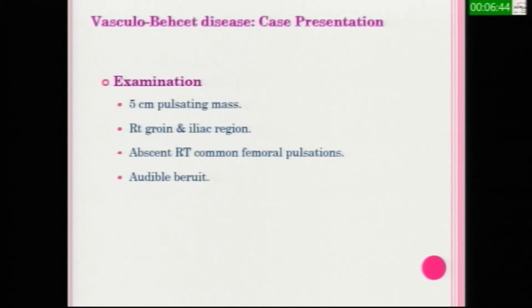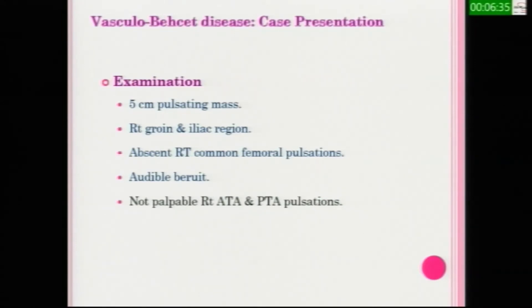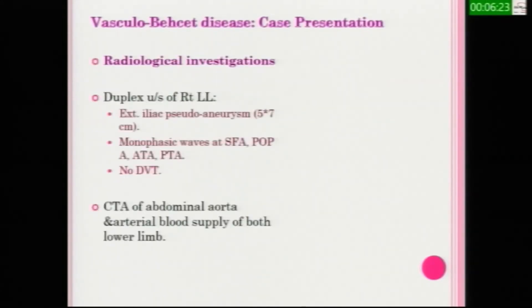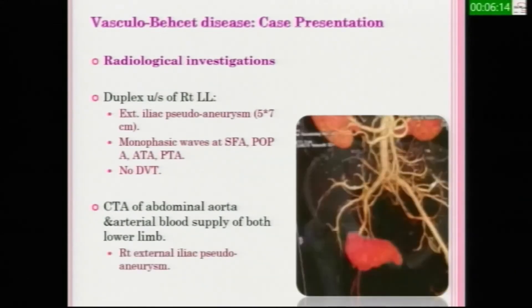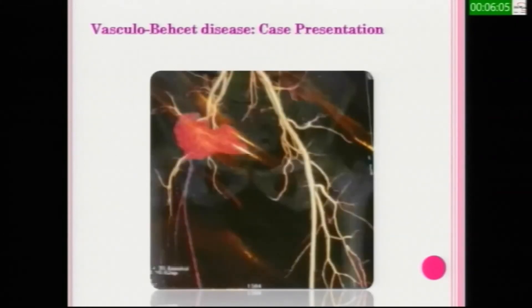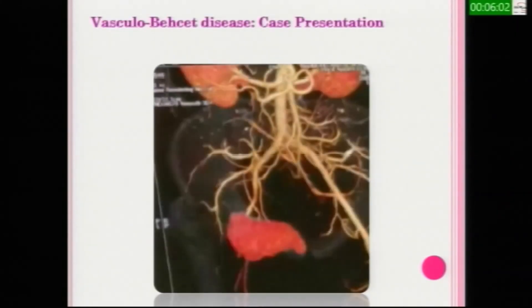After examination, we found a 5 cm pulsating mass at the right groin and iliac region with absent right common femoral pulsation. There was no anterior tibial or posterior tibial pulsation, no palpable right popliteal artery pulsation, and no sensory or motor loss at the lower limb. Laboratory investigation was normal. Radiological investigation showed external iliac artery pseudoaneurysm 5 x 7 cm with monophasic SFA, popliteal, anterior tibial, and posterior tibial. CT angiography showed right external iliac artery pseudoaneurysm; the rest of the vascular system was normal. This picture shows the marvelous collaterals.